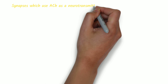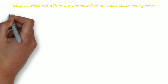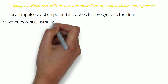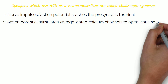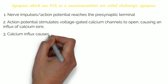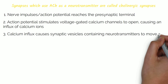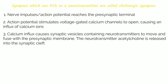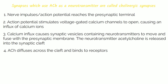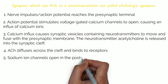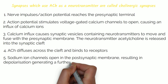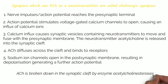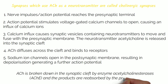Acetylcholine (ACh) and noradrenaline are examples of neurotransmitters. Synapses which use acetylcholine are called cholinergic synapses. A nerve impulse or action potential reaches the pre-synaptic terminal, stimulating voltage-gated calcium channels to open, causing an influx of calcium ions. This calcium influx causes synaptic vesicles containing neurotransmitters to move and fuse with the pre-synaptic membrane, releasing acetylcholine into the synaptic cleft. Acetylcholine diffuses across the cleft and binds to receptors, opening sodium ion channels in the postsynaptic membrane, resulting in depolarisation and generating a further action potential. Acetylcholine is broken down in the synaptic cleft by the enzyme acetylcholinesterase (AChE), and the products are reabsorbed by the pre-synapse.